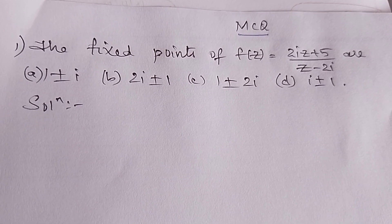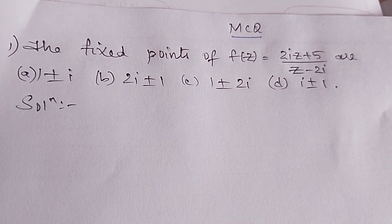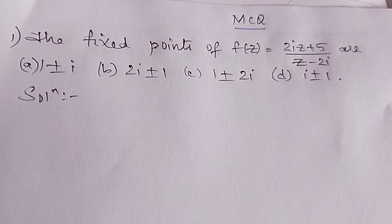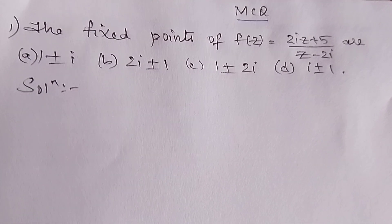The question is: find the fixed points of f(z) = (2iz + 5)/(z - 2i). So basically, we have to find the fixed points of this given transformation.